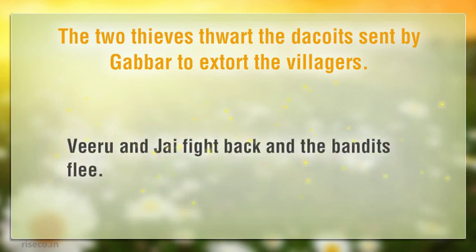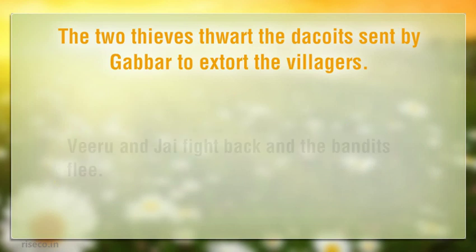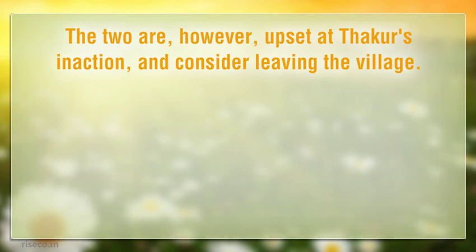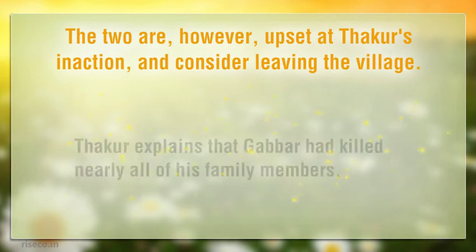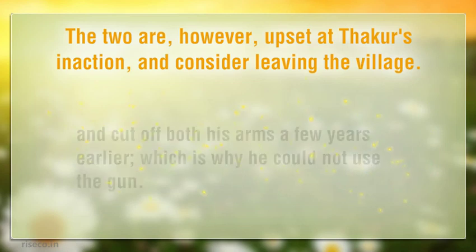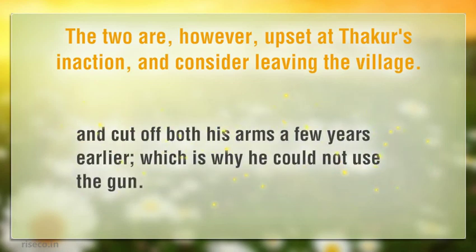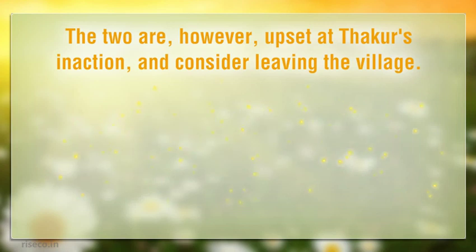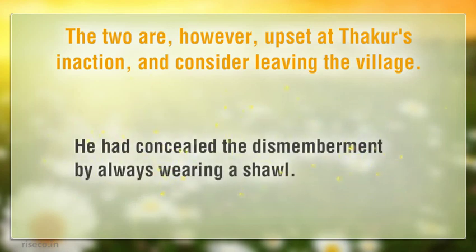The two are upset at Thacker's inaction and consider leaving the village. Thacker explains that Gabbar had killed nearly all of his family members and cut off both his arms a few years earlier, which is why he could not use the gun. He had concealed the dismemberment by always wearing a shawl.